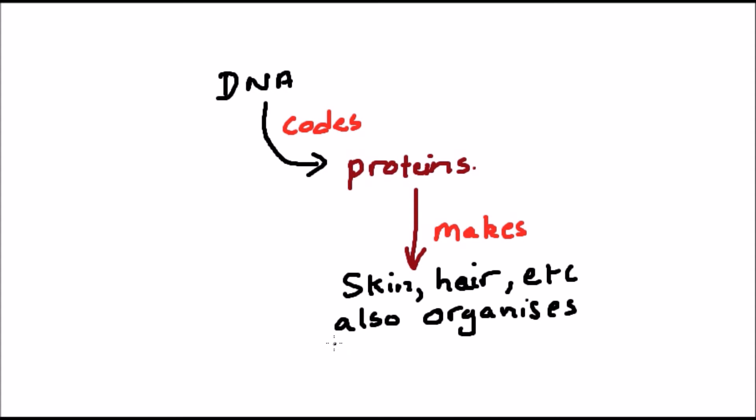Even things like bone, which are not made of protein, are laid down by the proteins acting together to coordinate them. Roughly speaking, the DNA segment which codes for a single particular protein is called a gene.